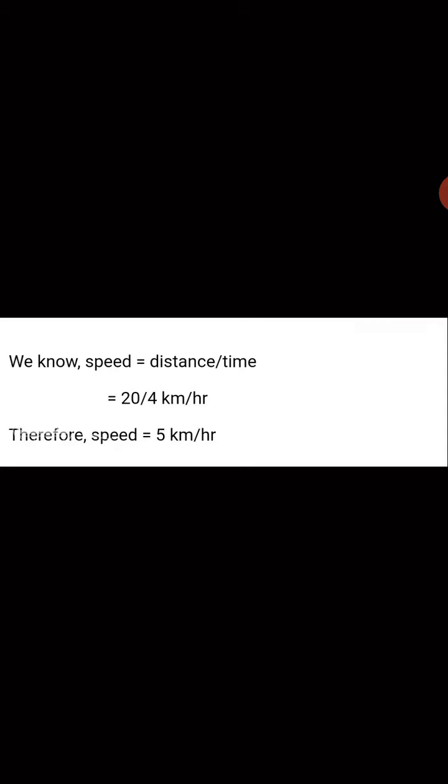We know the formula for speed is distance divided by time. Substituting the values: speed equals 20 divided by 4, which gives us 5. So the speed of the man is 5 kilometers per hour. The units are kilometers per hour because distance was given in kilometers and time was given in hours.